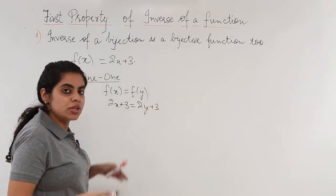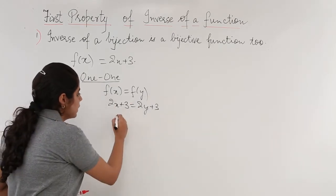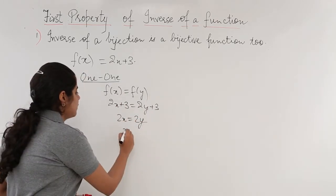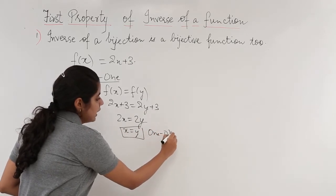I substitute f(x) as 2x plus 3, f(y) as 2y plus 3, cancel out: I have 2x is equal to 2y, cancel the twos, I have x is equal to y, and I say it is one-one. This we have already done.